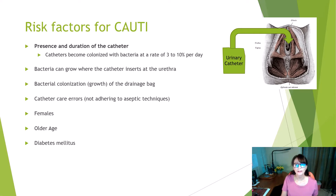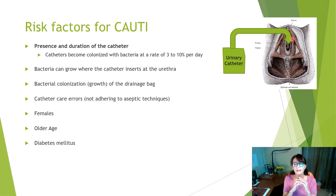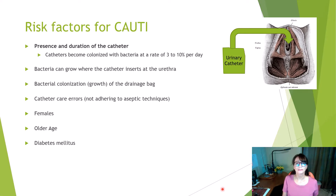Bacteria can grow where the urine enters the catheter. For example, up in the right-hand corner you can see where the catheter is entering at the urethra — bacteria can grow right around that catheter and sit there in what we call a biofilm, a group of bacteria living together on the catheter. They can also grow in the catheter drainage bag itself, increasing your risk of CAUTI. There can also be errors in catheter care, and females, older age, and patients with diabetes frequently have increased risk as well.